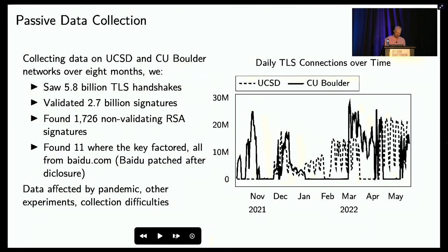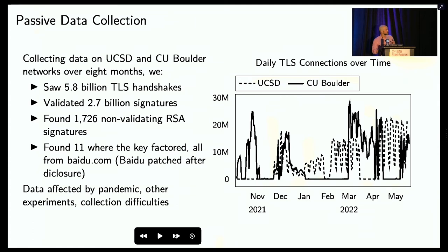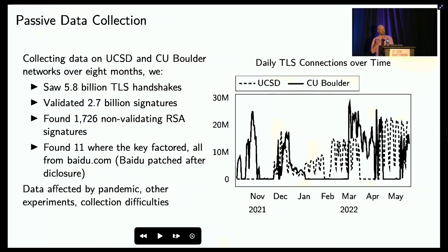Since this is a known vulnerability, how did Baidu end up with this problem? As many websites do, since signatures are expensive, they offloaded signing to a hardware accelerator. Unfortunately, when they did this they bypassed the checks that had been introduced into the library, so once the hardware began to fail, they started sending out faulty signatures over the wire — which allowed us to factor keys using a single bad signature.